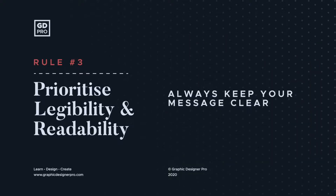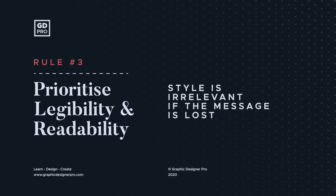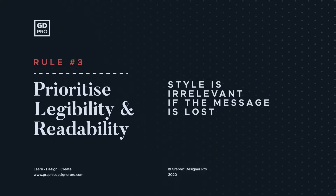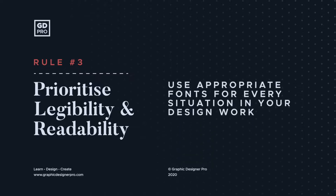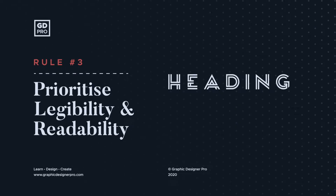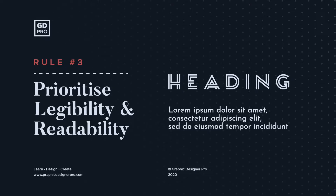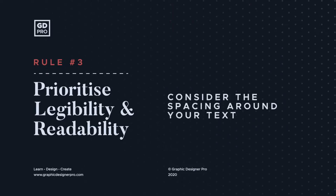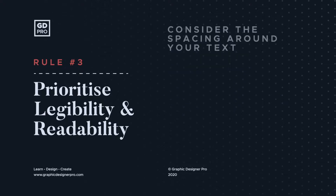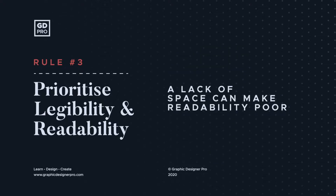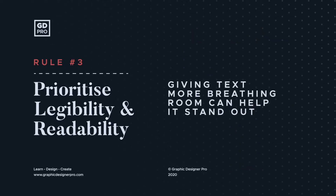Make sure the purpose of your work is being adhered to first — there's no point in making something look good if it can't be used as intended. Use appropriate fonts for every situation. For example, larger headings can call for a more eye-catching and detailed appearance, while smaller body copy tends to suit something more simplified and thin in weight. Finally, consider the spacing in and around your text. Cramming elements too close together or formatting your text poorly can also affect readability, so always try to give your type enough breathing room to let it stand out more.